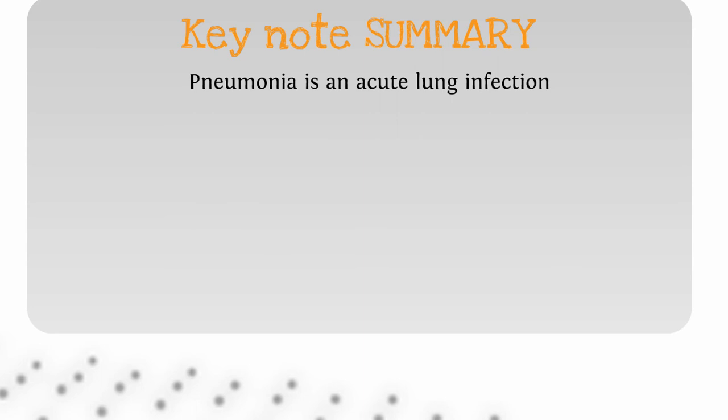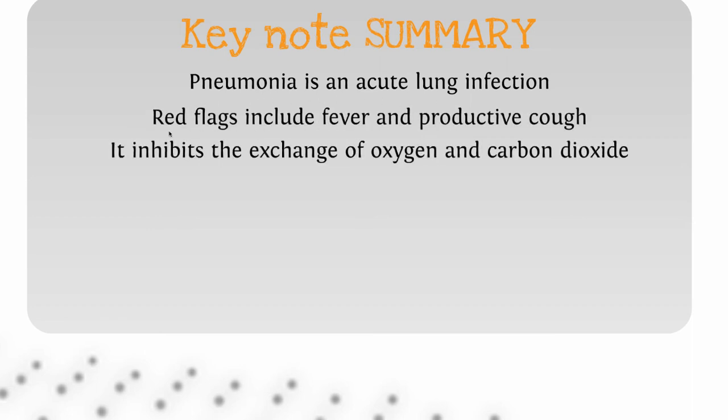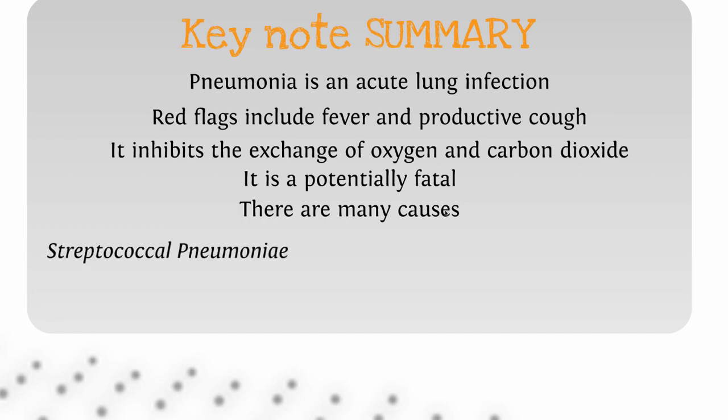Let's look at our keynote summary. First off, pneumonia is an acute lung infection. The red flags include fever and productive cough, and it inhibits the exchange of oxygen and carbon dioxide. If you can remember these three key points, you'll have a fairly good understanding of what pneumonia is. Moving on, it is potentially fatal. There are many different causes, etiologies, and pathogens that can lead to pneumonia. Two of the most common are Streptococcal pneumoniae and Pseudomonas aeruginosa.